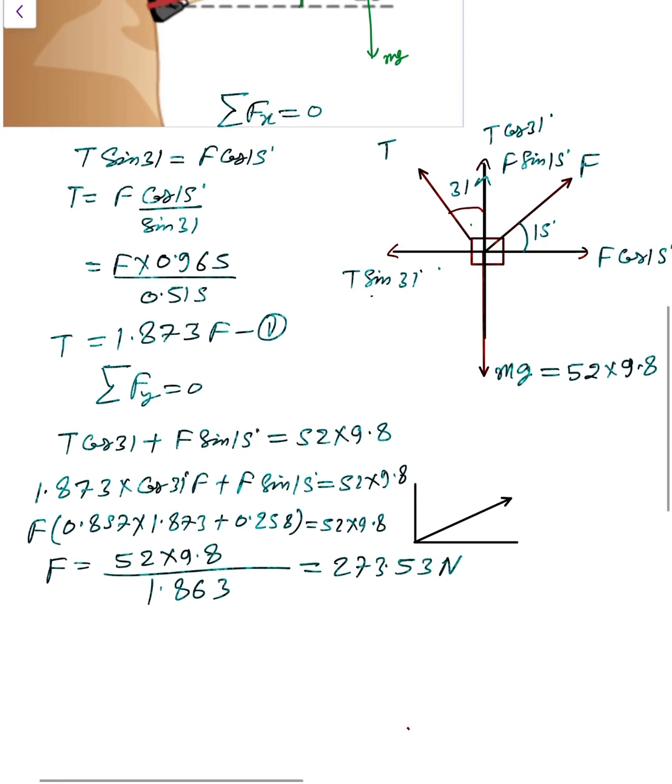Now if this value we put in, we got F is 1.873 into 273.53. Multiply by 1.873, then we got T, that is 512.33 Newtons. Clear?